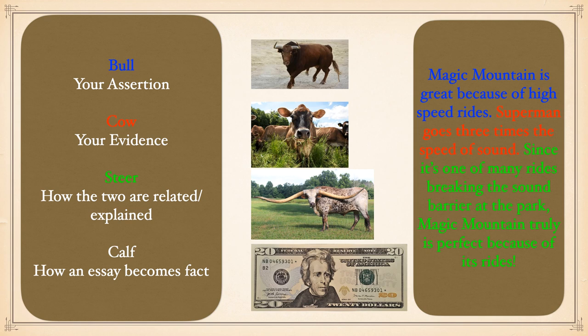Here's the practical example: 'Magic Mountain is great because of high-speed rides' — that's your bull. Your evidence: Superman goes three times the speed of sound — that's your cow, though in this case it's actually false. Then comes the explanation, the steer: 'Since it's one of many rides breaking the sound barrier at the park, Magic Mountain truly is perfect because of its rides.' That combination of bull, cow, and steer is essentially what your essay is trying to do, just with more examples to reinforce the point.